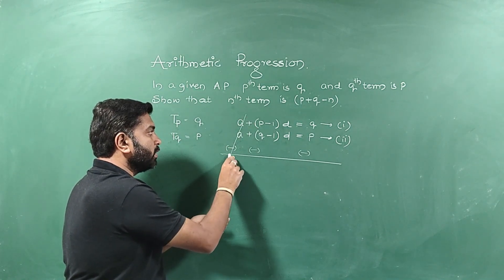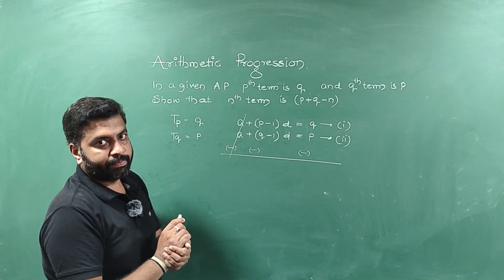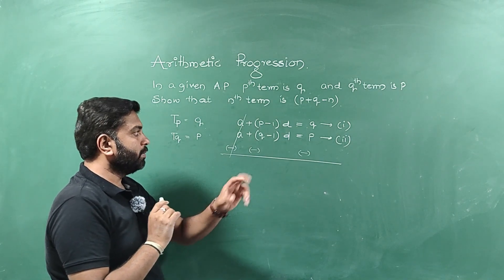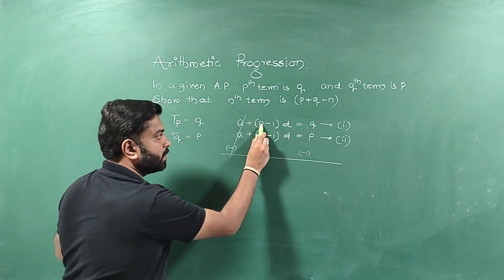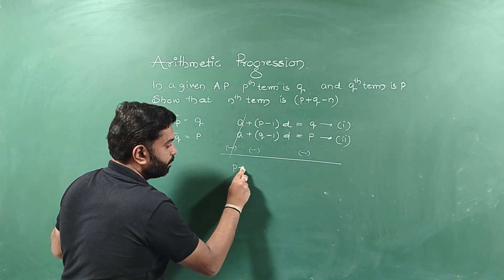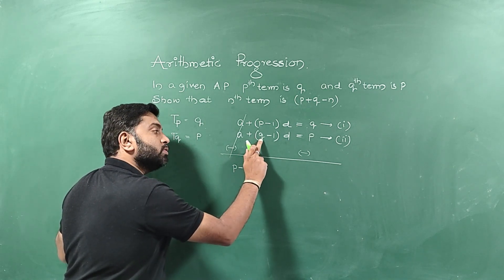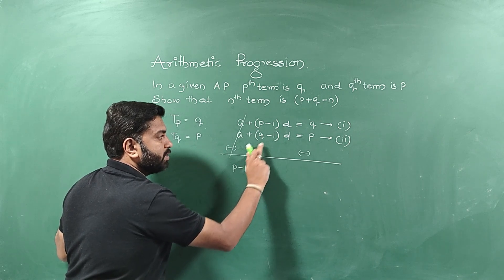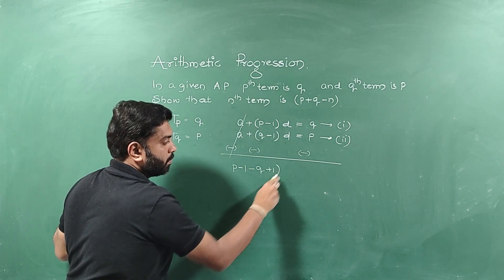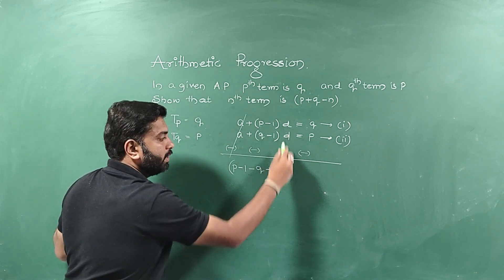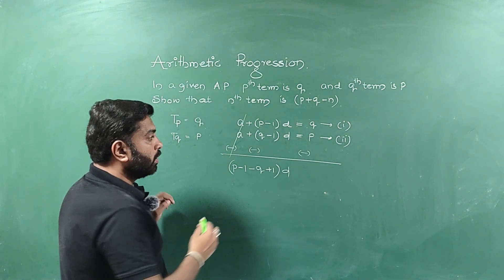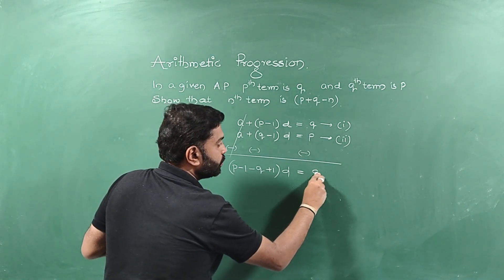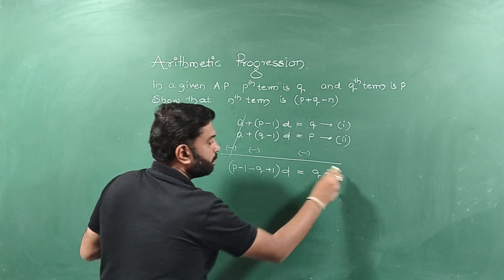So A minus A, both the terms are going to get cancelled. So the remaining is very important. Try to understand this step. P minus 1 minus Q minus 1. Can I write minus Q minus into minus plus 1 into D. That's equal to, can I write Q minus P.